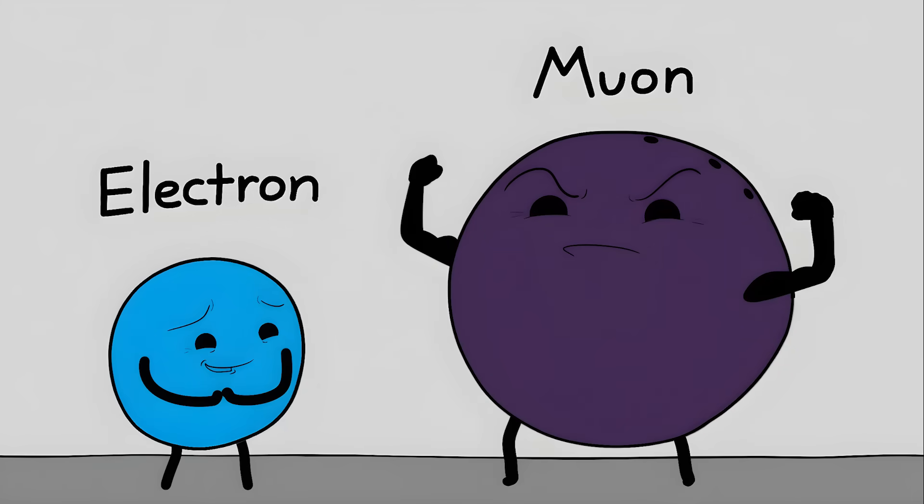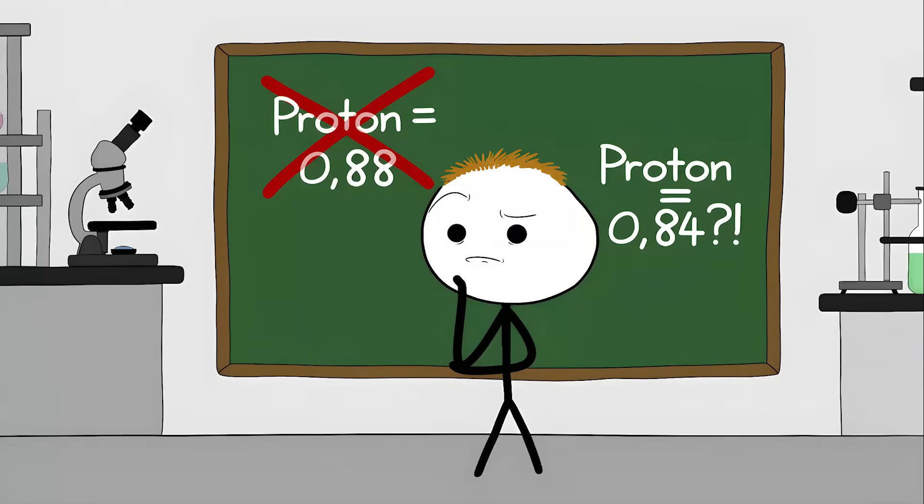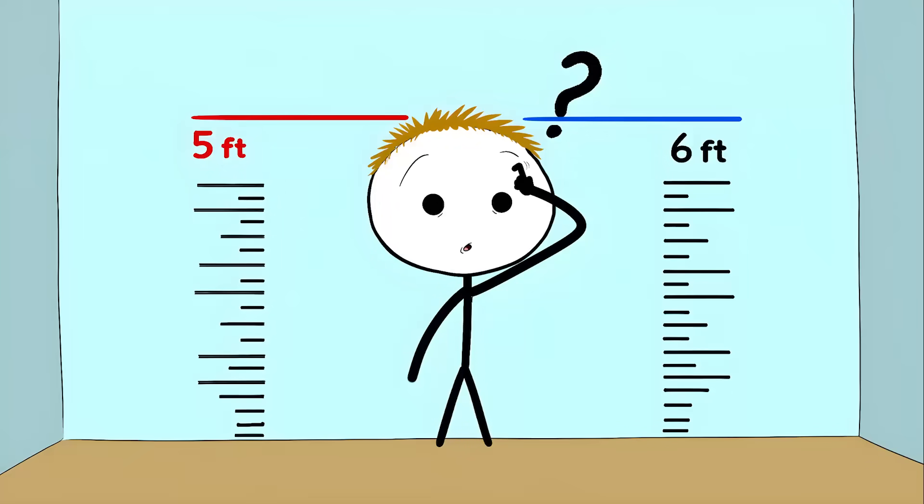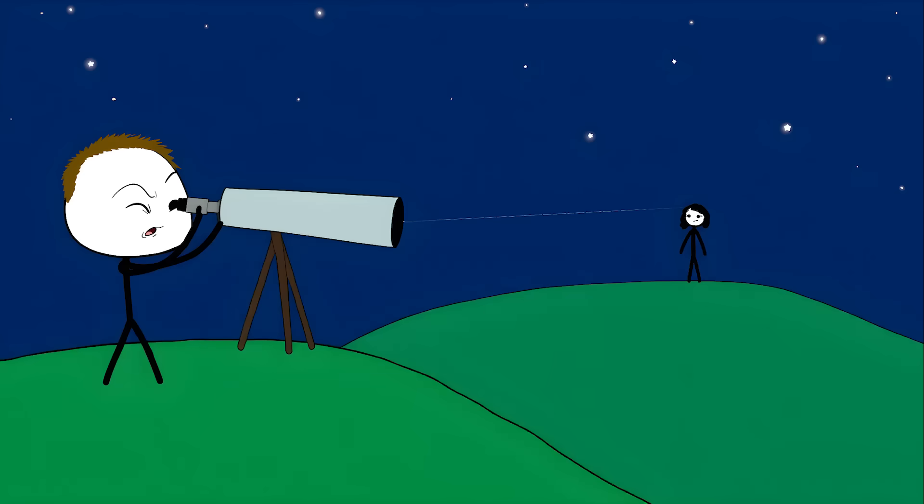Muons are like electrons' bigger, heavier cousins. Think of them as bowling balls instead of tennis balls. The muon measurements showed the proton was significantly smaller, about 0.84 femtometers. In the world of physics, this is like measuring your height and finding out you're simultaneously five feet and six feet tall. Both measurements are extremely precise. It's like measuring the width of a human hair from a mile away.